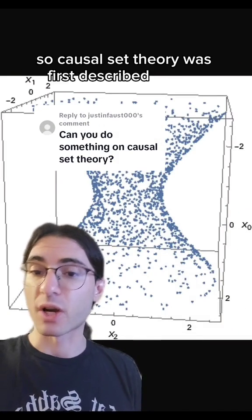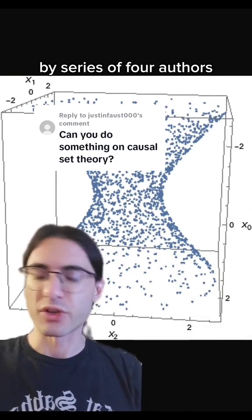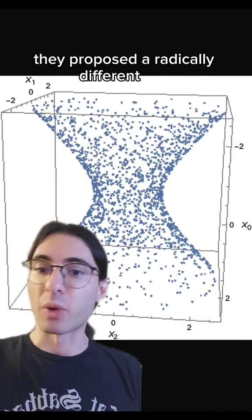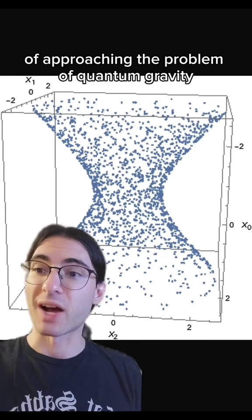Causal set theory was first described in 1987 by a series of four authors whose names I'm not going to worry about. They proposed a radically different way of approaching the problem of quantum gravity.